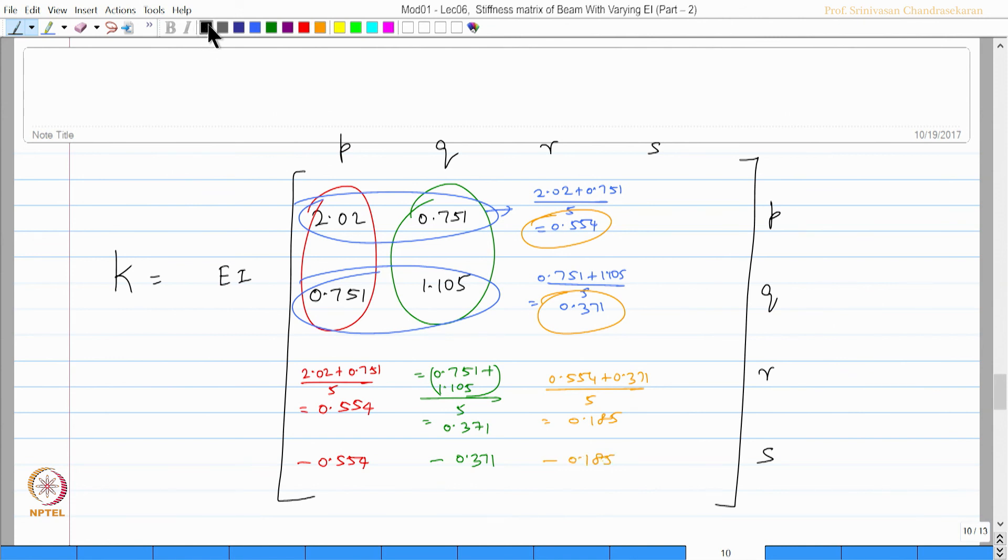Of course, the last column is very simple. It is actually negative of R column. So minus 0.554, minus 0.371, minus 0.185, and 0.185. I get the stiffness matrix.